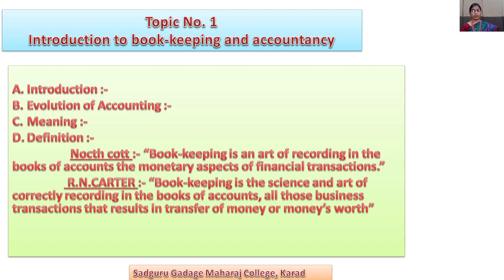In 1494, Luca di Borgo Pacioli, an Italian merchant, introduced the double-entry bookkeeping system. In the 18th and 19th century, large-scale operations were carried on and joint stock companies emerged as an important form of organization. To safeguard the interest of owners and investors, detailed financial information is needed. In the 20th century, the need for analysis of financial information for managerial decision-making caused the emergence of management accounting as a separate branch of accounting.